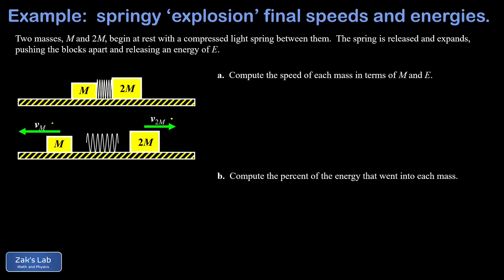So in part a we're getting the speed of each mass in terms of m and E and we have two tools to use here: momentum and energy. Each of those is going to generate an equation and this is a good thing because we have two unknowns vm and v2m.